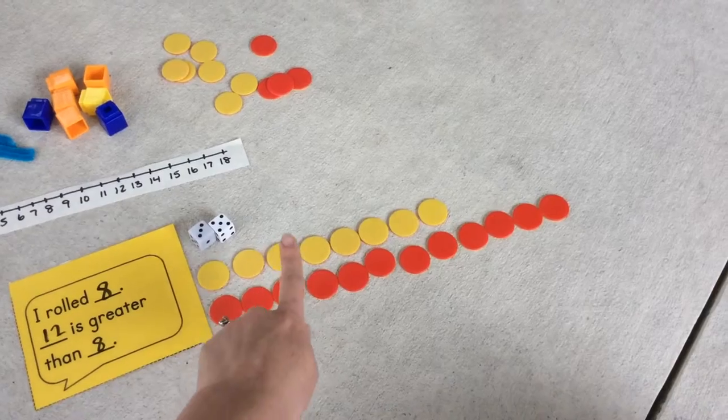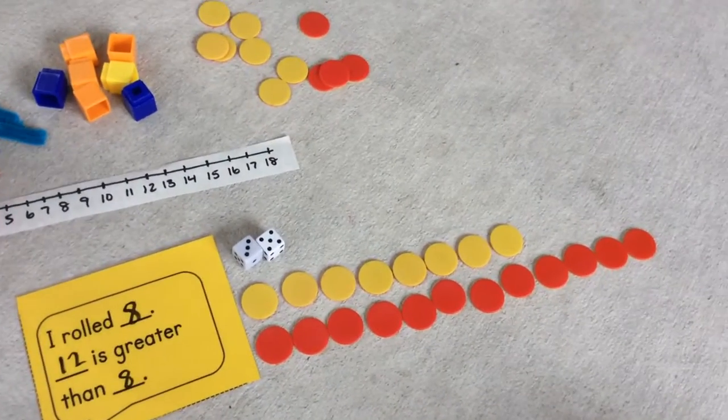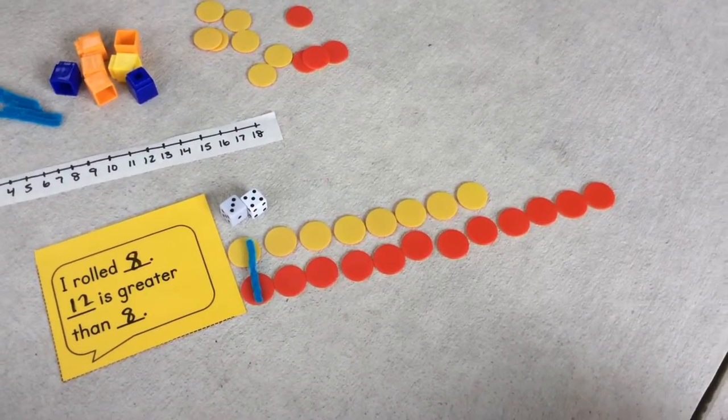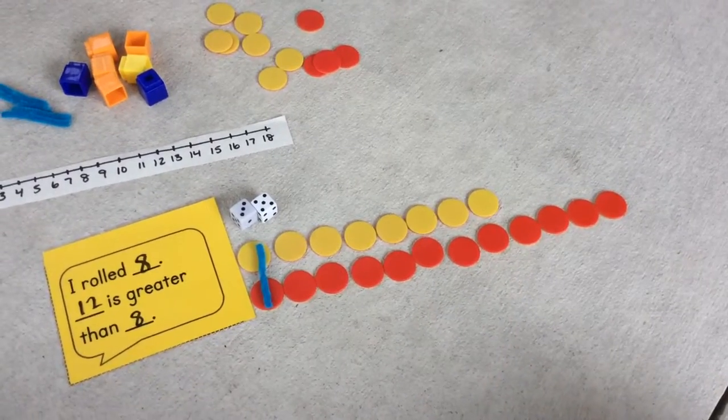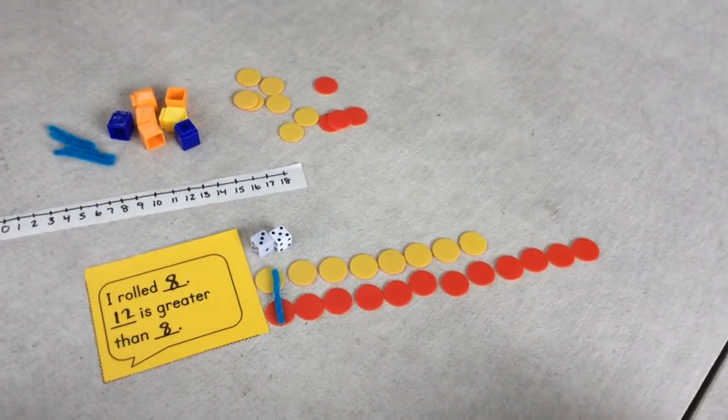I lined mine up so that they all have a buddy, which you could use your pipe cleaners to make sure they have a buddy. And you can explain that in your video, or you can explain if you used a number line. I can't wait to hear your thinking.